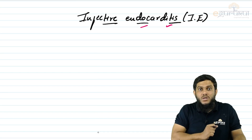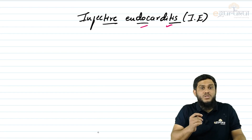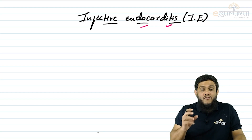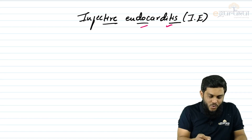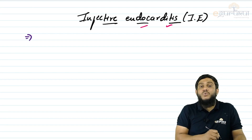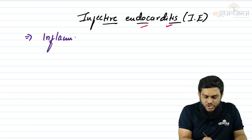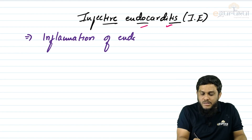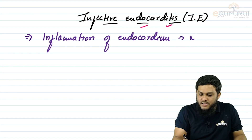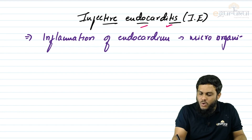Endocarditis may be due to an infectious cause, where microorganisms are responsible, or it may be due to a non-infectious cause. If the endocarditis is due to an infectious cause, we call it infective endocarditis — that is, inflammation of the endocardium caused by microorganisms.